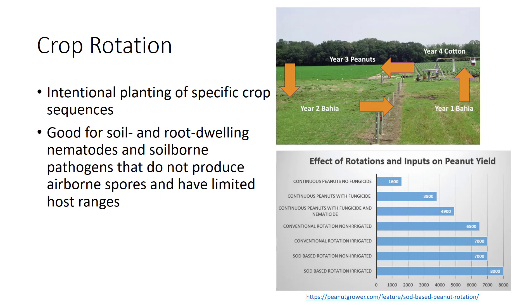One of the oldest cultural practices, crop rotation, is the intentional planting of specific crop sequences to improve crop health. It is widely practiced to increase organic matter, improve soil properties, conserve water, and manage pests. Crop rotation has provided effective control for certain host-specific plant pathogens, nematodes, and insects by disrupting the plant's life cycle and by changing environmental conditions to deter certain species. Good candidates for management by crop rotation include soil and root-dwelling nematodes and soil-borne pathogens that do not produce airborne spores and have limited host ranges. When rotation is used, alternate weed hosts must be controlled as well. Grains are routinely used as parts of a crop rotation sequence. In the sod-based crop rotation project at the North Florida Research and Education Center, a 160-acre field is divided into quadrants and rotated with two years of bahia grass followed by a year of peanuts and then a year of cotton. This system has shown long-term benefits in soil health, reduced pest pressure, and increased crop yields.